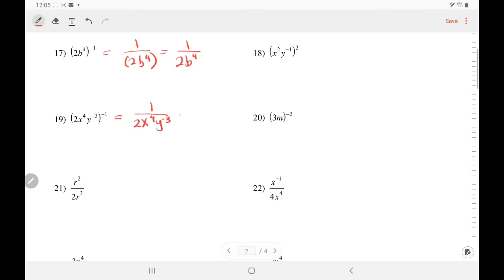Notice Y has a negative exponent. Any term with a negative exponent is moving. So Y is at the bottom now. Because of its negative exponent, we will move it to the top. So it becomes Y to the 3rd, and then 2X to the 4th.